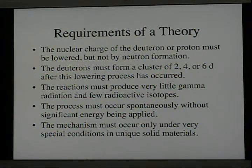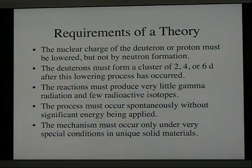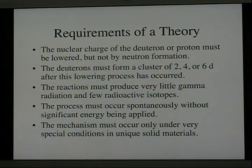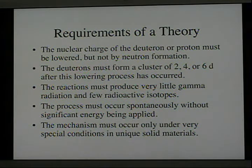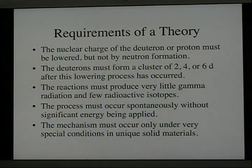The nuclear charge of the deuteron or proton must be lowered, but not by neutron formation. Neutrons produce nuclear products that are generally radioactive, and these are not seen, and they also produce radiation, which is not seen. The deuterons must form a cluster of two, four, or six deuterons after this lowering process has occurred.